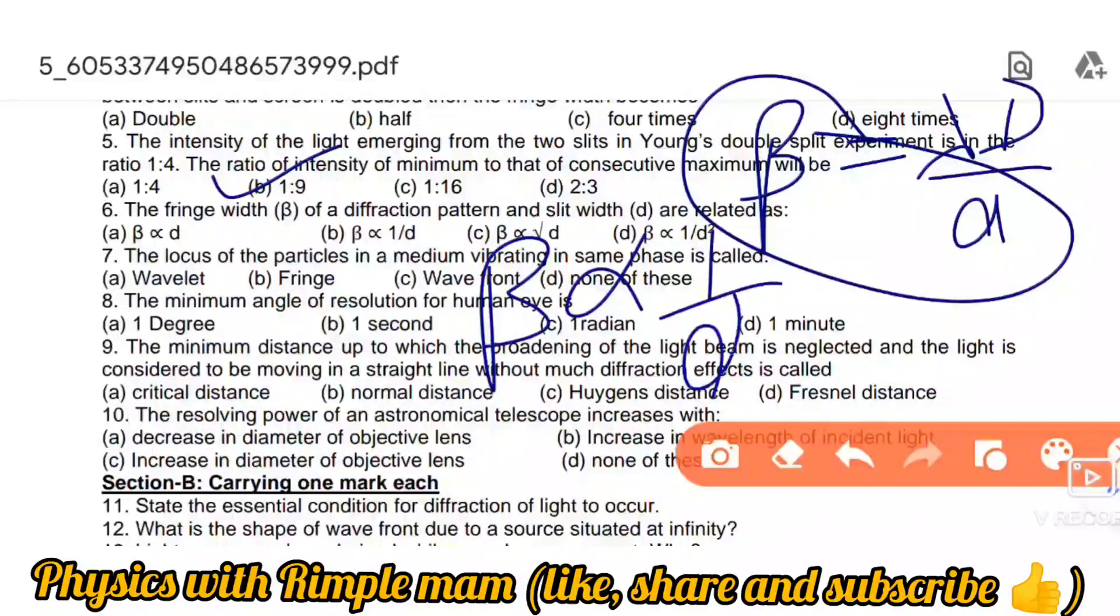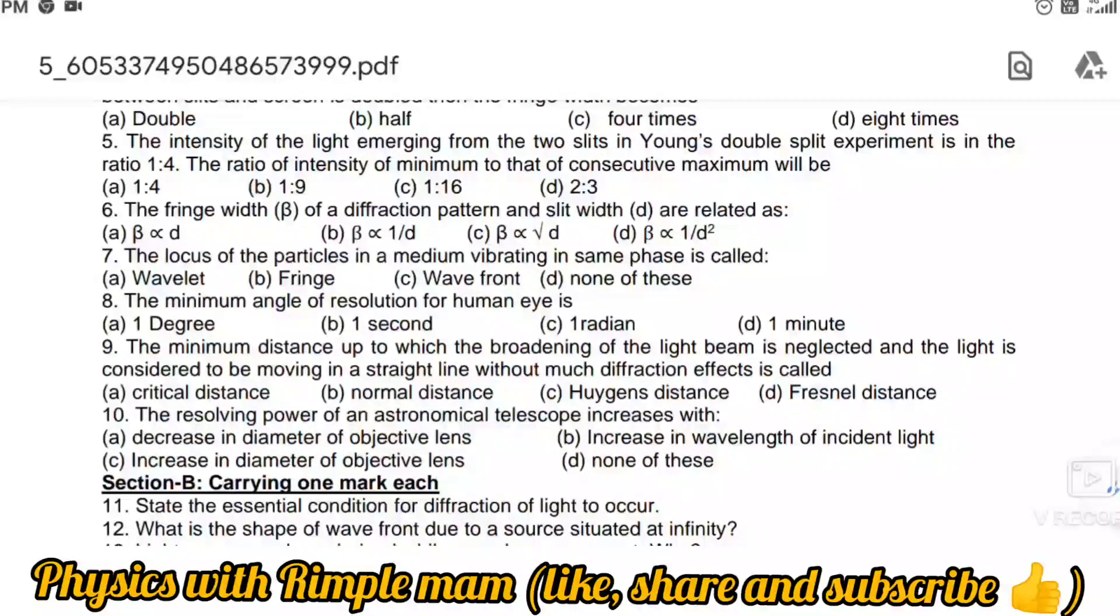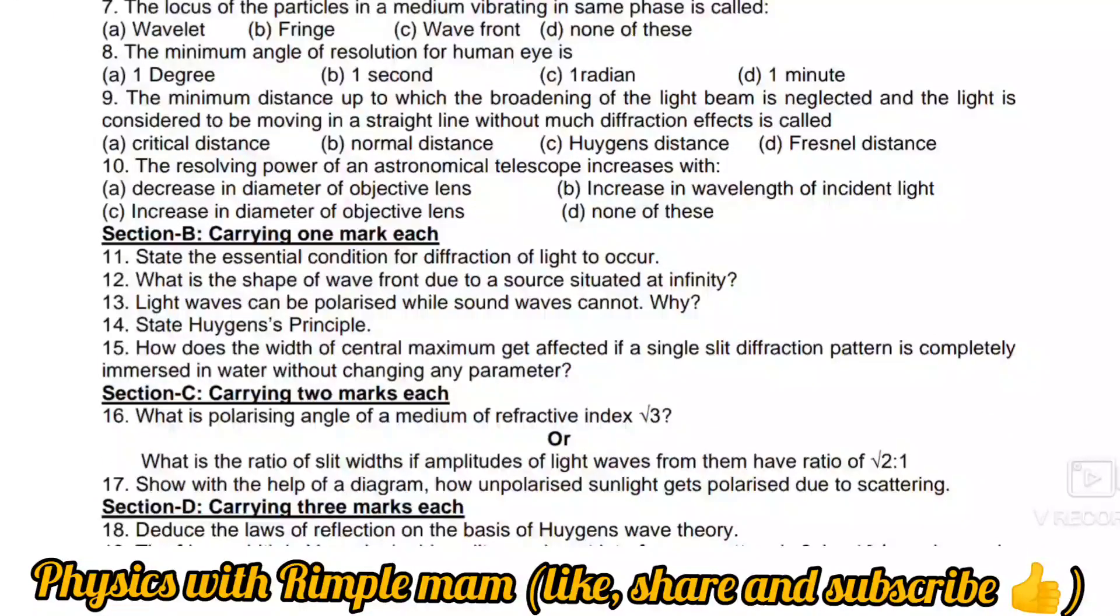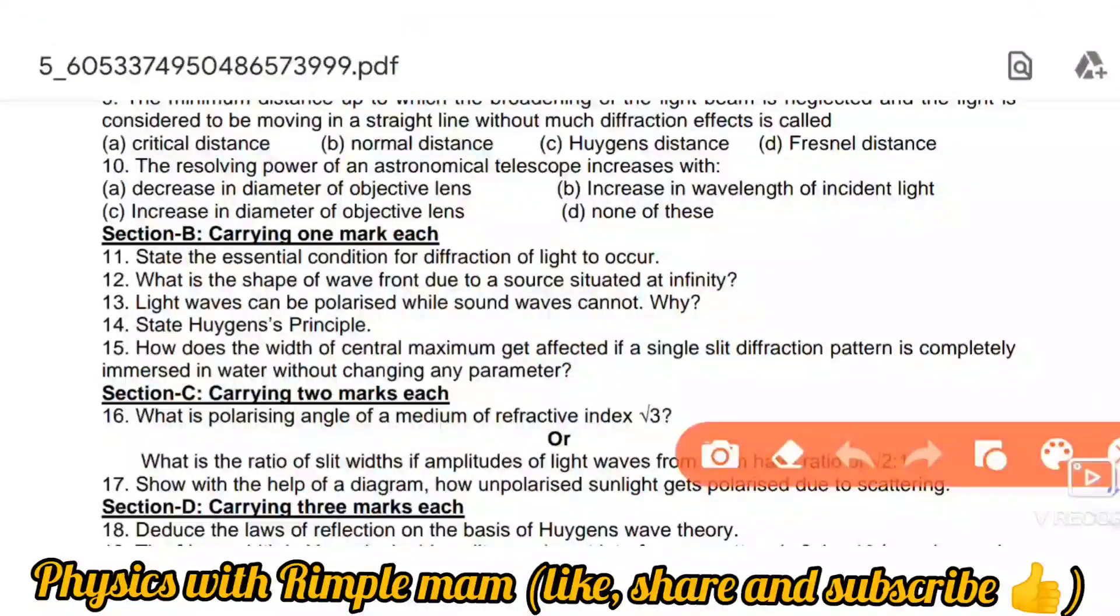Next: The locus of particles of a medium vibrating in the same phase is called fringe width. Next: Minimum angle of resolution for human eye is one radian. The minimum distance up to which the broadening of light beam is neglected and light is considered to be moving in a straight line without much diffraction is known as Fresnel diffraction. Next: The resolving power of an astronomical telescope increases with increase in diameter of objective lens.